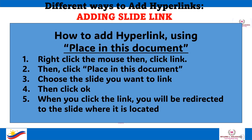How to add a hyperlink using Place in This Document. First, right-click the mouse, then click Link. Then click Place in This Document. Choose the slide you want to link, then click OK. When you click the link, you will be redirected to the slide where it is located.